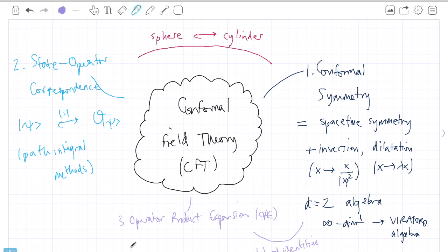Mathematically, the operator product expansion takes the following form. It says that the product of two operators A and B at separated points can be written as a linear combination of operators at one of the points weighted by some powers of the distance between the points.